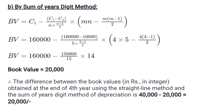Now let's calculate using the sum of years digit method. The formula for book value is: BV = CI − (CI − CS) × [m(2n − m + 1)] / [n(n + 1)], where CI is the initial cost, CS is the salvage value, n is the life period, and m is the year in question. Putting all the values in, we get the book value.